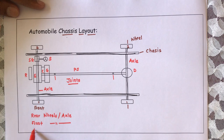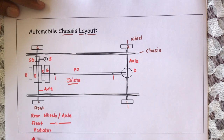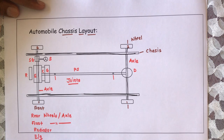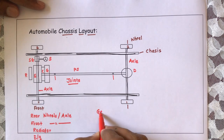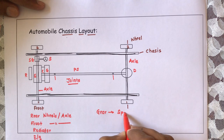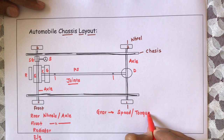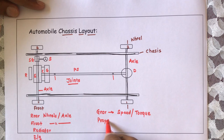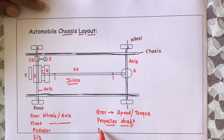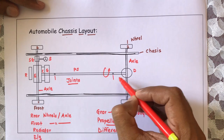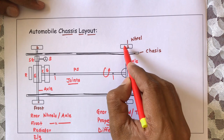It has a radiator in order to cool the engine. Then the engine to generate power. Then the clutch, in order to have a change in speed or torque. Then the gearbox, similarly to change speed and torque. Then there is the propeller shaft — its function is to transfer power available at the engine towards the differential gearbox. At the final drive and differential gearbox, this rotational power is transferred perpendicularly to the axles.